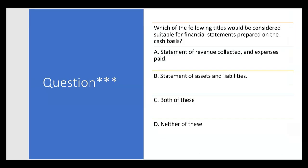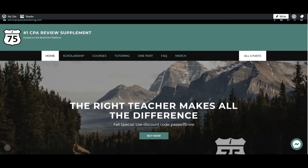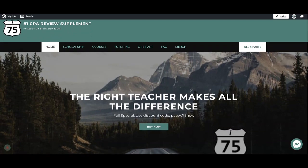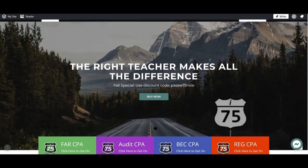Which of the following titles would be considered suitable for financial statements prepared on the cash basis? Which titles would be appropriate for a special purpose framework? If you think you know, leave the answer in the comment section. Don't forget to like and subscribe — it helps the channel out a lot. And if you need more help with reporting or any part of the CPA audit exam, get yourself on I-75, where the right teacher makes all the difference.